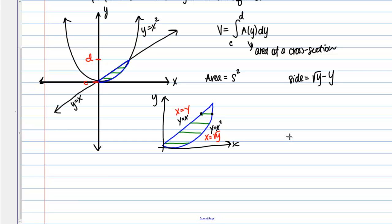So I've got my side of the square. So then, now I can go ahead and actually write down that area function and it's just simply side squared. So root y minus y quantity squared is the area of one of these square cross sections.